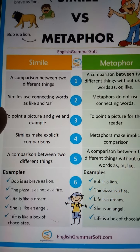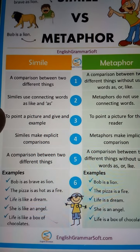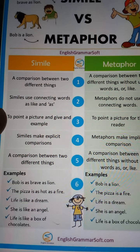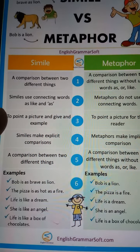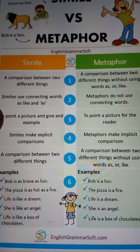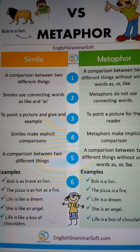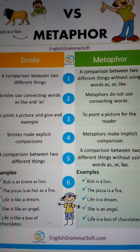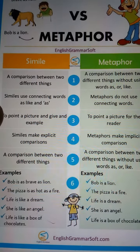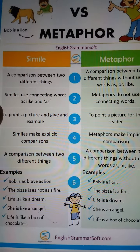'Bob is a lion.' 'The pizza is as hot as fire.' 'The pizza is a fire.' 'Life is like a dream.' 'She is like an angel.' 'She is an angel.' 'Life is like a box of chocolates.' 'Life is a box of chocolates.' More metaphor examples: 'Life is a journey,' 'Love is life,' 'Struggle is life,' 'Life is a struggle,' 'World is a stage.' These are all examples of metaphor.